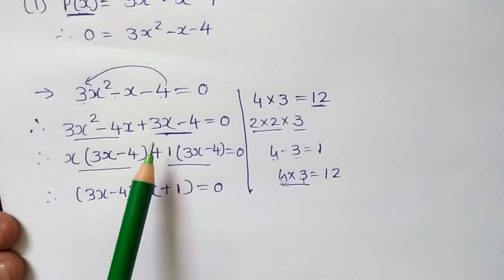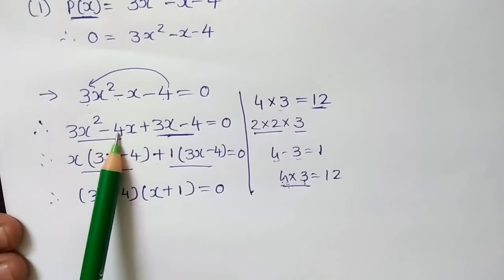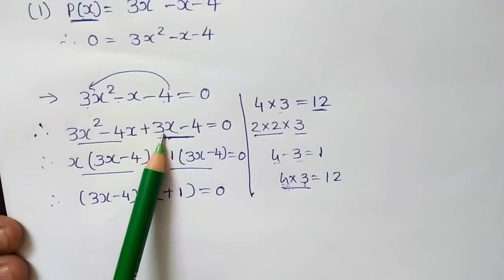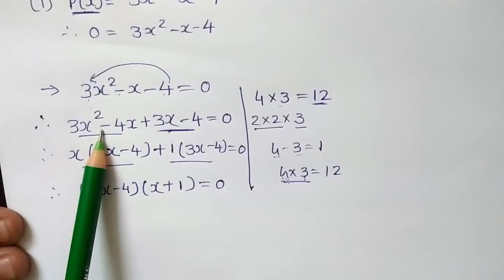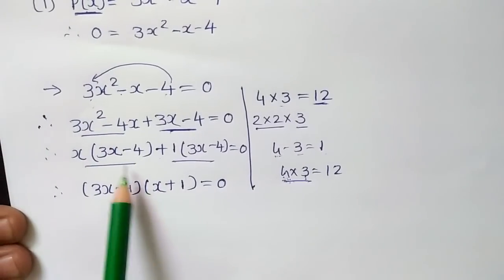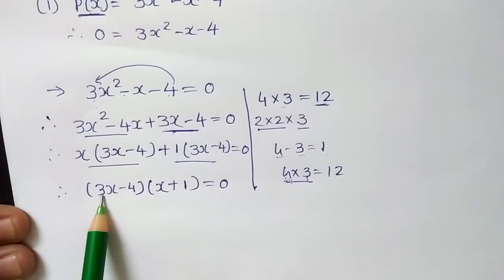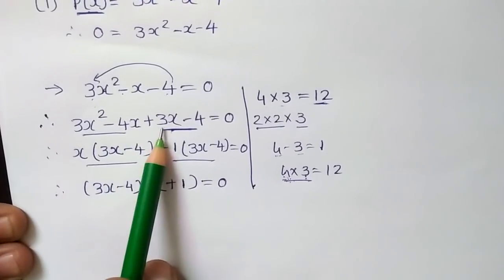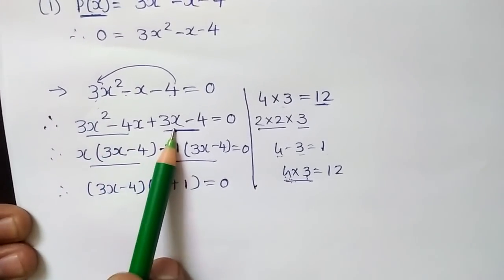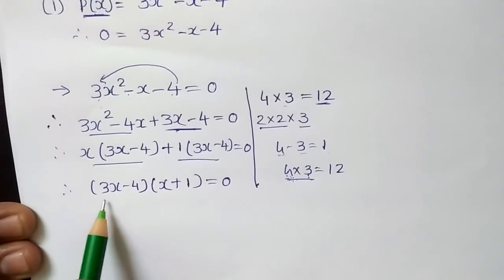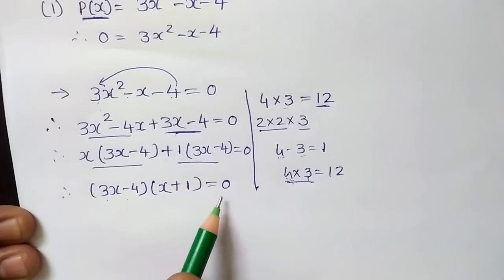You might wonder whether writing 3x first or -4x first makes a difference — it does not. Whether you keep -4x + 3x or 3x - 4x, the result is the same. So (3x - 4)(x + 1) = 0.